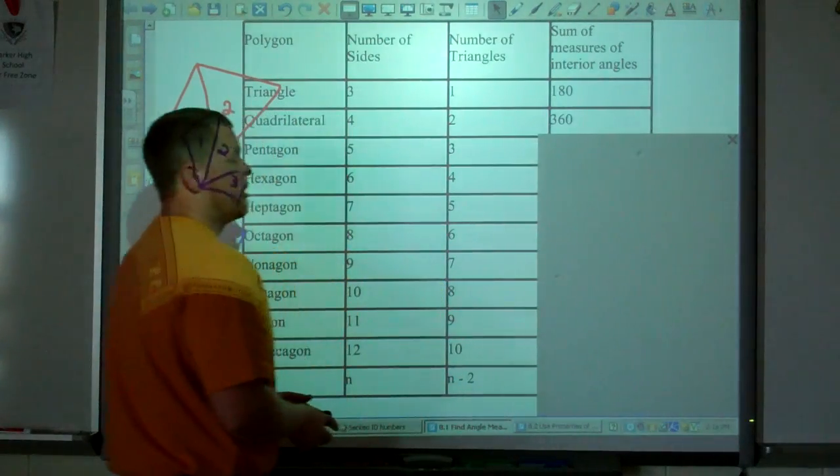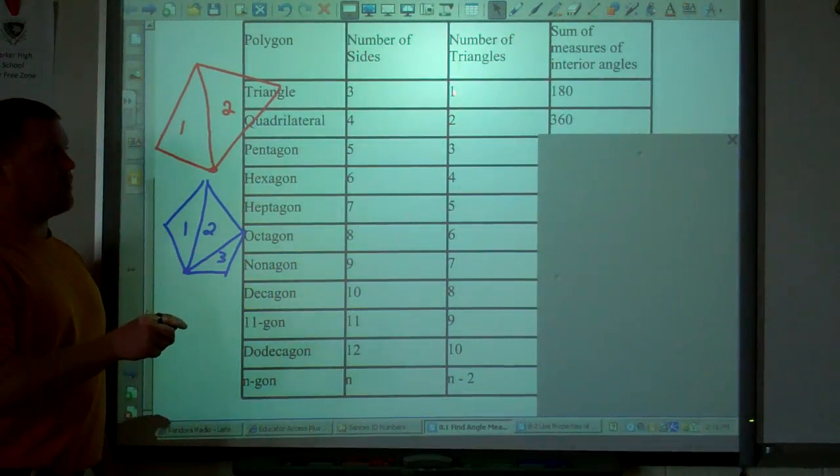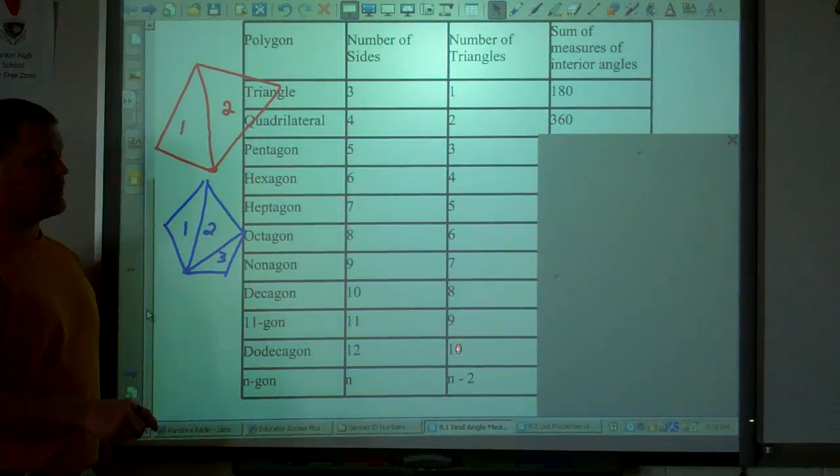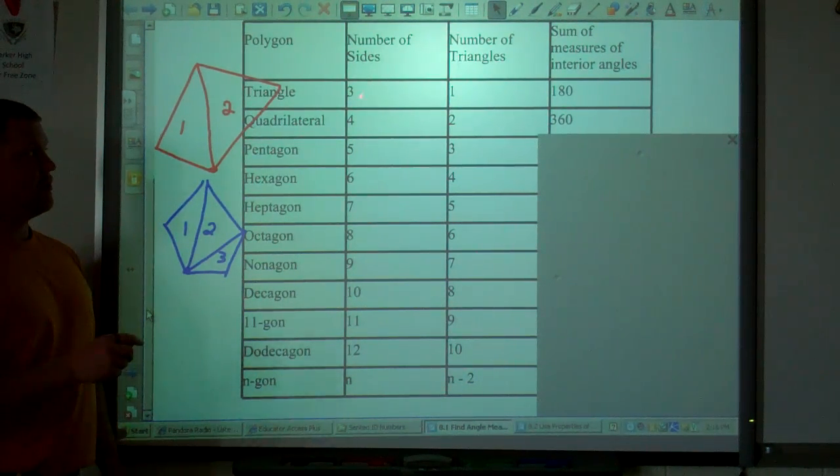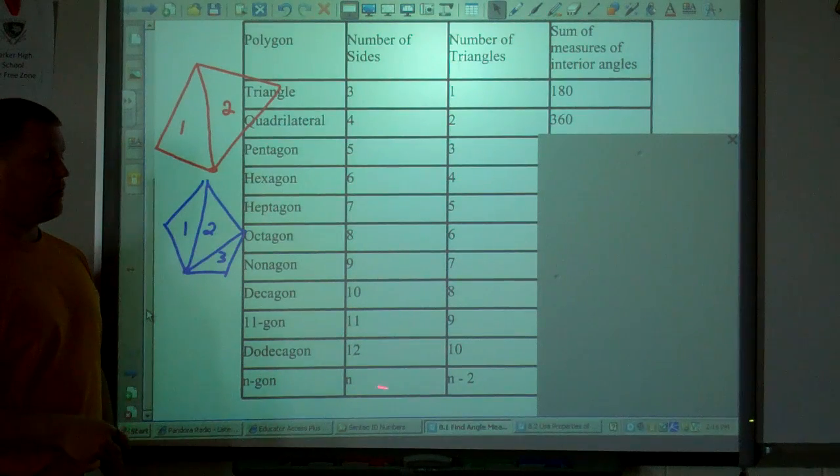And if you go on and look at all the other polygons, you get this pattern: one, two, three, four, five, six, seven, eight, nine, ten, so on and so forth. For an n-gon, it's n minus two. The number of sides minus two. It works. It fits for all these.